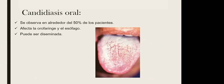La candidiasis oral es característica del VIH o de cualquier inmunosupresión, porque la Candida albicans es un microorganismo que se encuentra normalmente en la boca. Sin embargo, cuando existe inmunosupresión se produce un desequilibrio que provoca este padecimiento. Se observa alrededor del 50% de los pacientes con VIH y puede afectar también la orofaringe y el esófago. Se caracteriza por lesiones blancas cremosas, placas principalmente en la lengua.